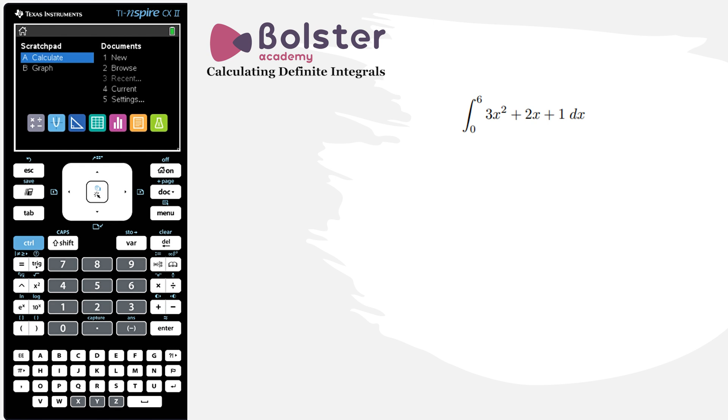Let's look at this first question. We've got the integral from 0 to 6 of 3x squared plus 2x plus 1 dx. So how do I do this on my calculator?